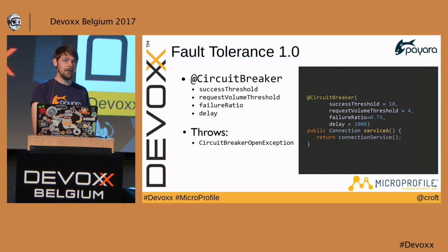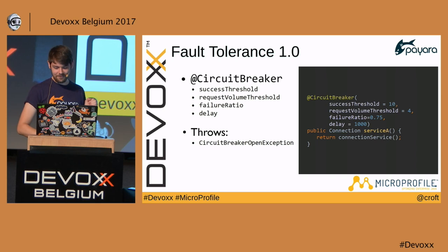The circuit breaker has properties: successThreshold, requestVolumeThreshold, failureRatio (0.75), and delay (1000ms) — all combined to define whether the circuit should be open or closed. I really recommend looking at Open Liberty's guide on the circuit breaker; it goes into a lot of depth.